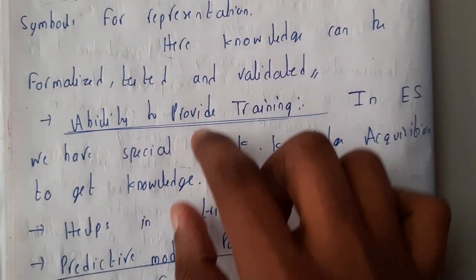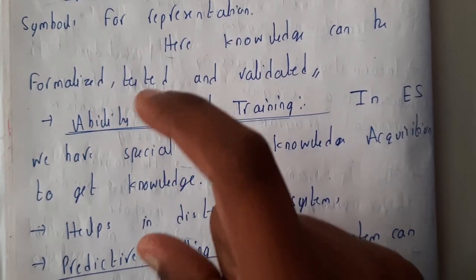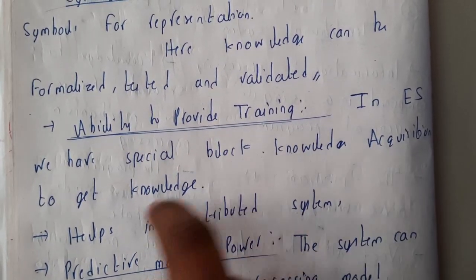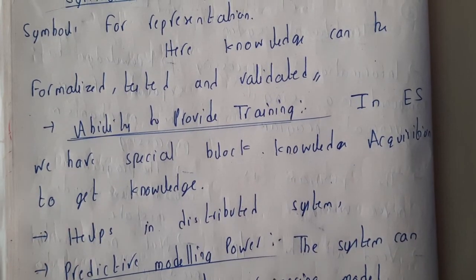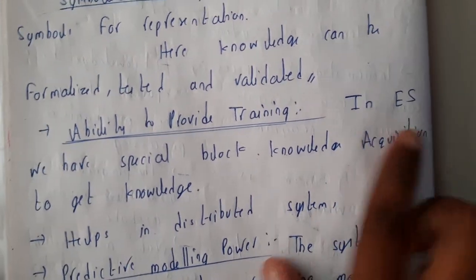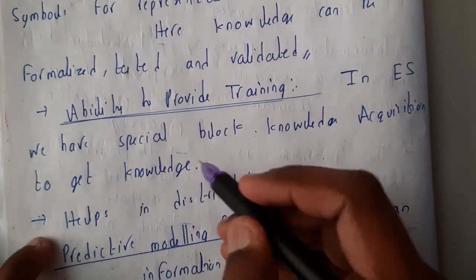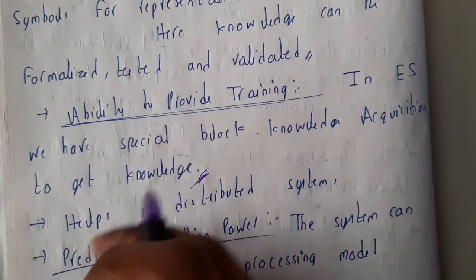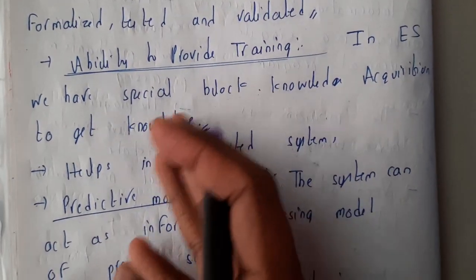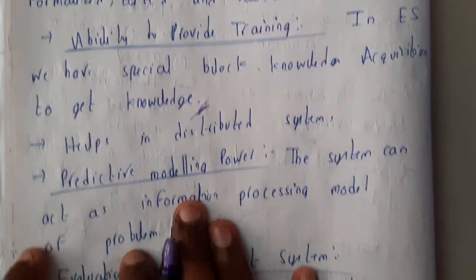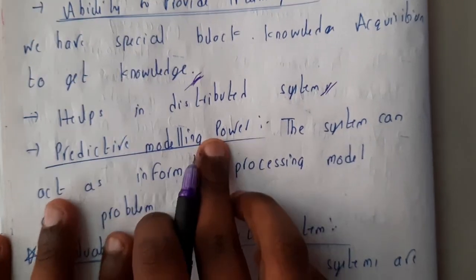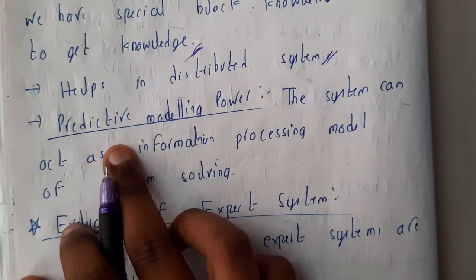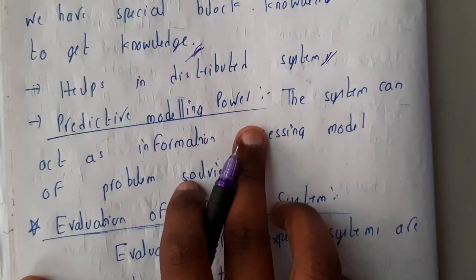The next characteristic is the ability to provide training. In our expert system we have a special block called knowledge acquisition, which is responsible for this. It provides training for the expert system. This block gets knowledge from case studies — whatever the expert system has done, it understands and analyzes it again. This expert system also plays a major role in distributed systems and predictive modeling.